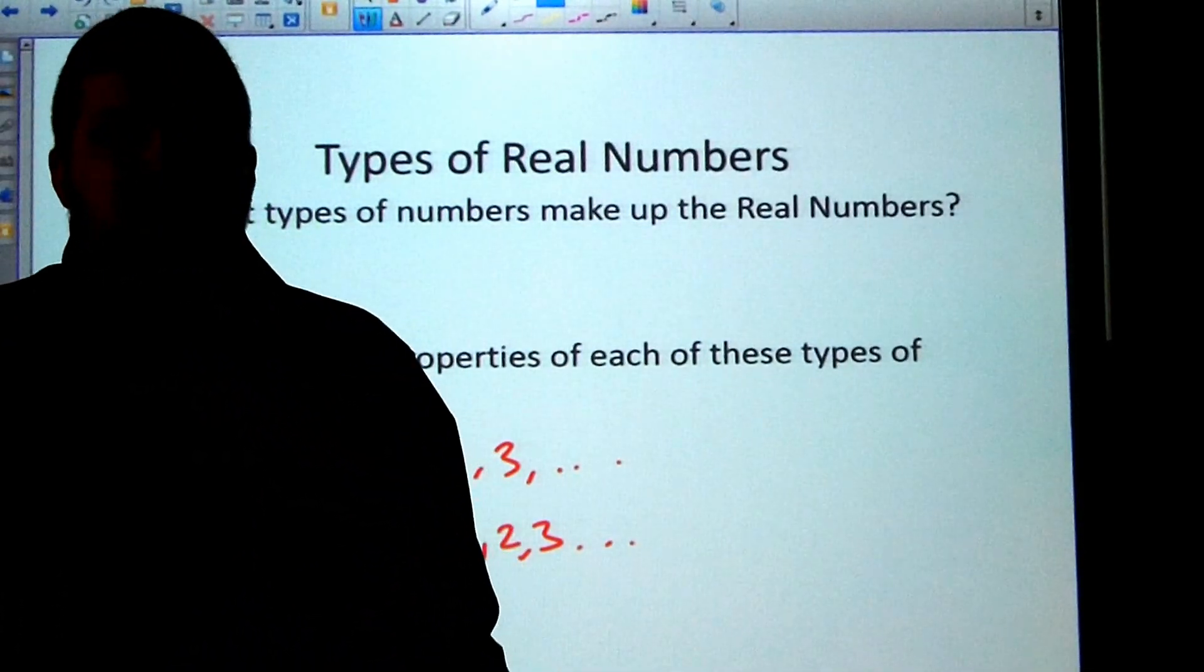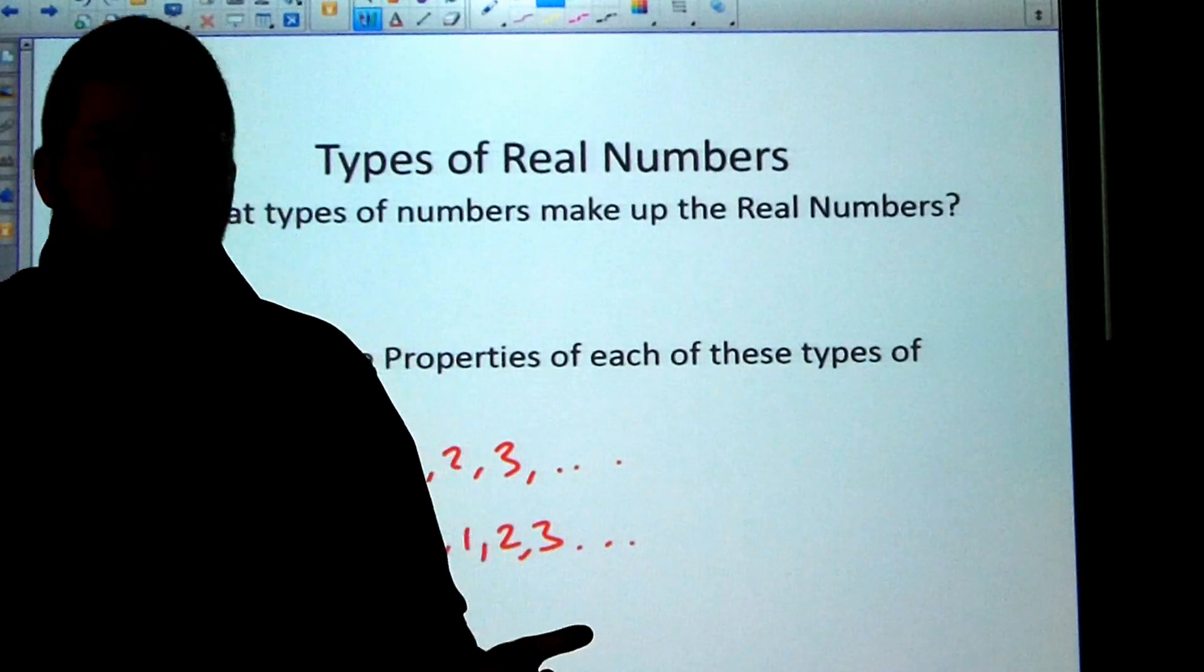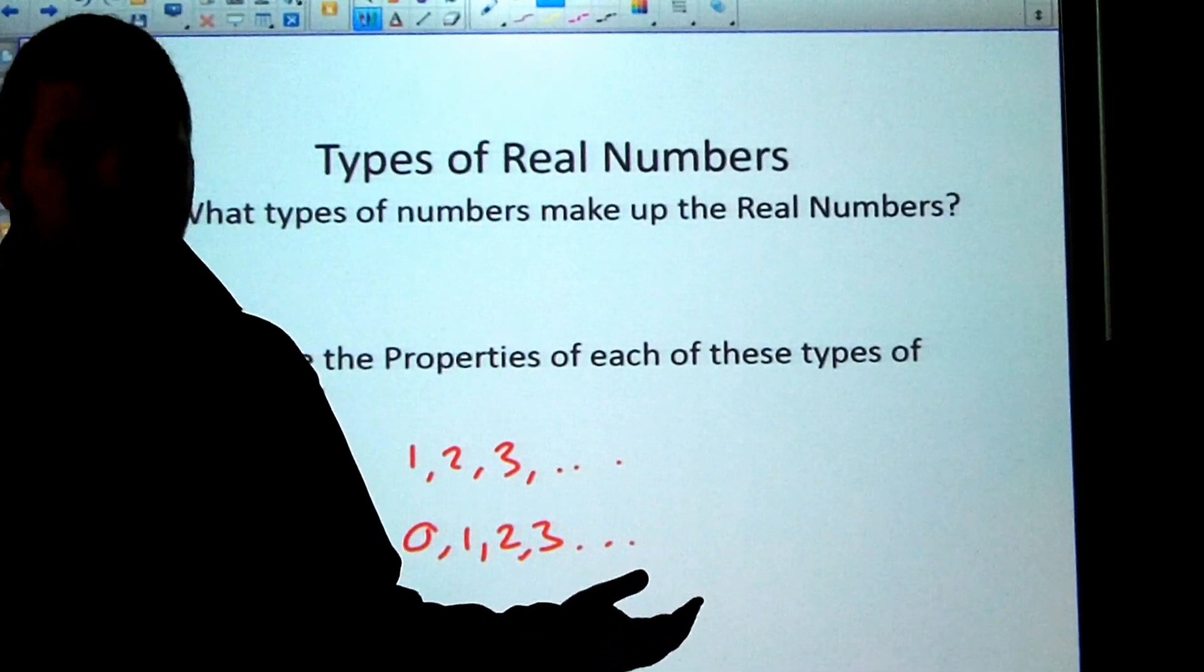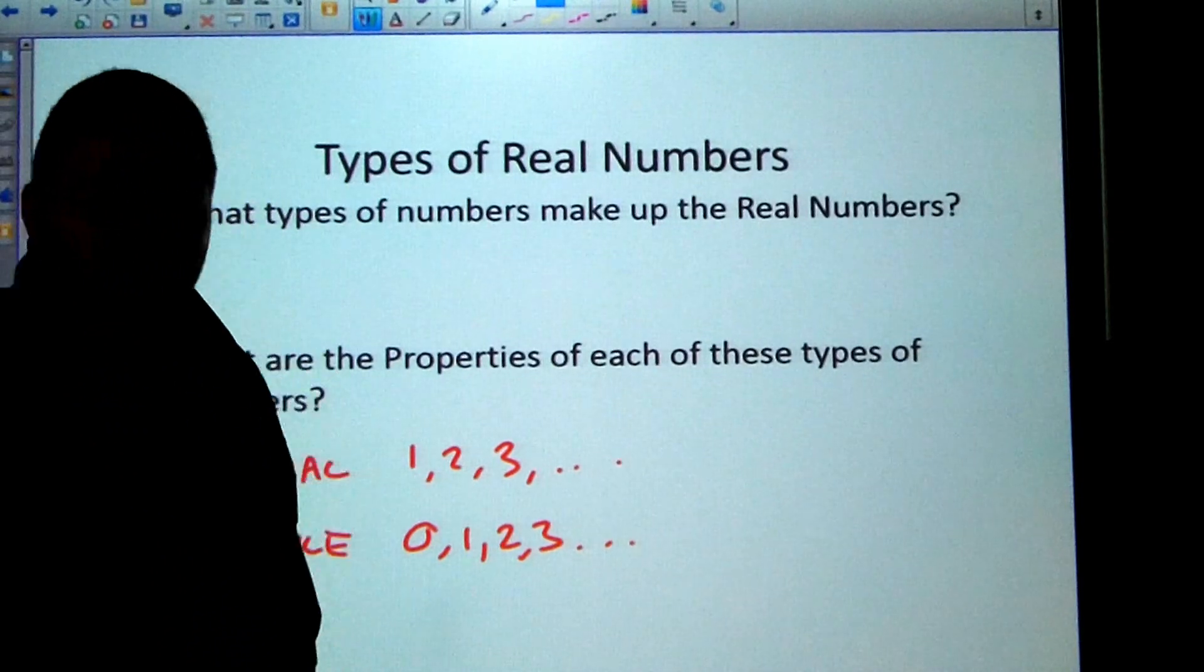Now the integers, we're just adding negative numbers. So we have like negative one, negative two, negative three, but we also have the whole numbers and natural numbers included.